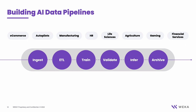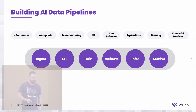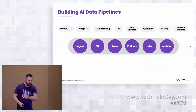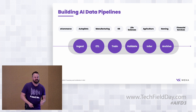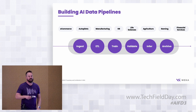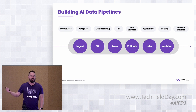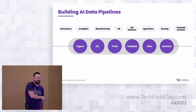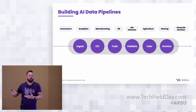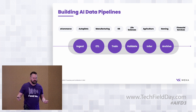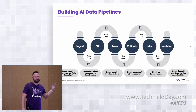But this does not represent reality. First of all, these steps are iterative. You may get down to the validation process and realize you need to go back and retrain. You may get to the inference stage and do the same thing. You may get to the archival stage and then actually need to use that data to rerun the models again — for example, if you need to retrieve it for legal or compliance purposes. So in reality, these data pipelines look more like this.